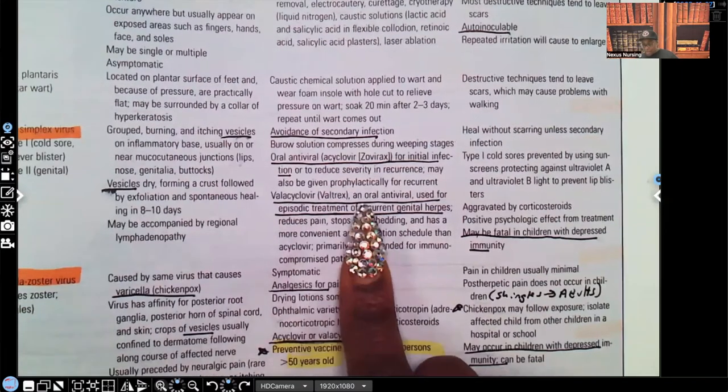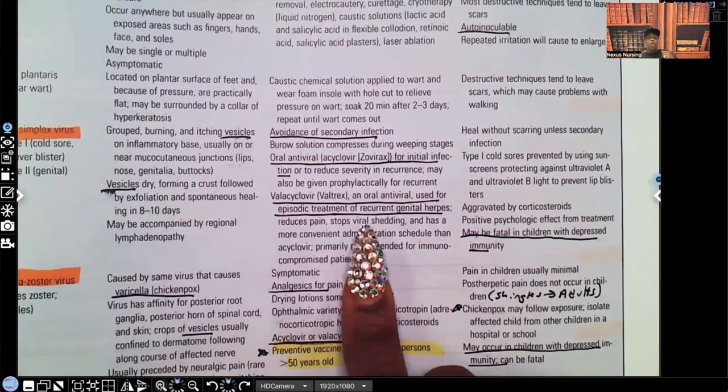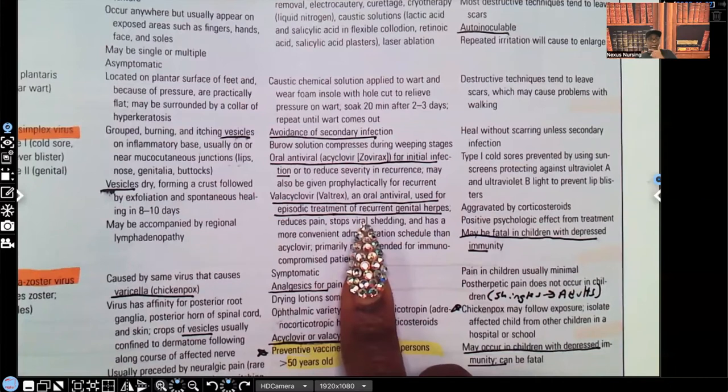Valacyclovir, that's Valtrex. That's an oral antiviral. It's used for episodic treatment of recurrent genital herpes. So guys, there's two types of your herpes simplex. You have your type 1, type 2. Type 1 is above the belt. We tend to see this around the oral area. We tend to see those lesions and type 2 tends to be below the belt. We tend to see it in the genital area.